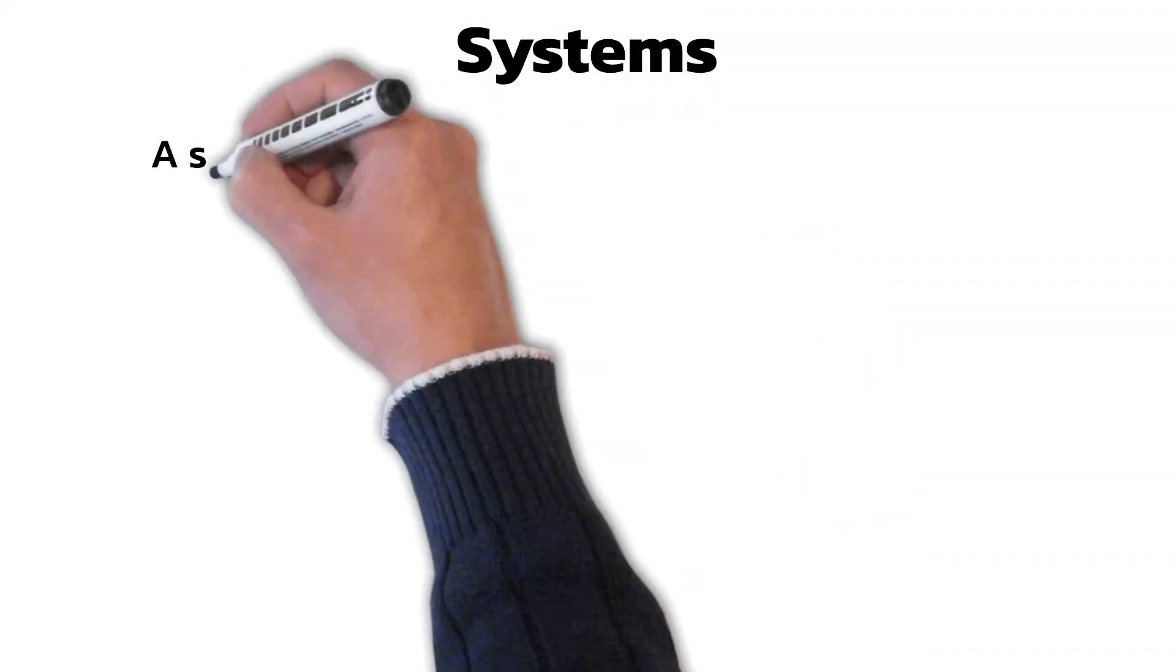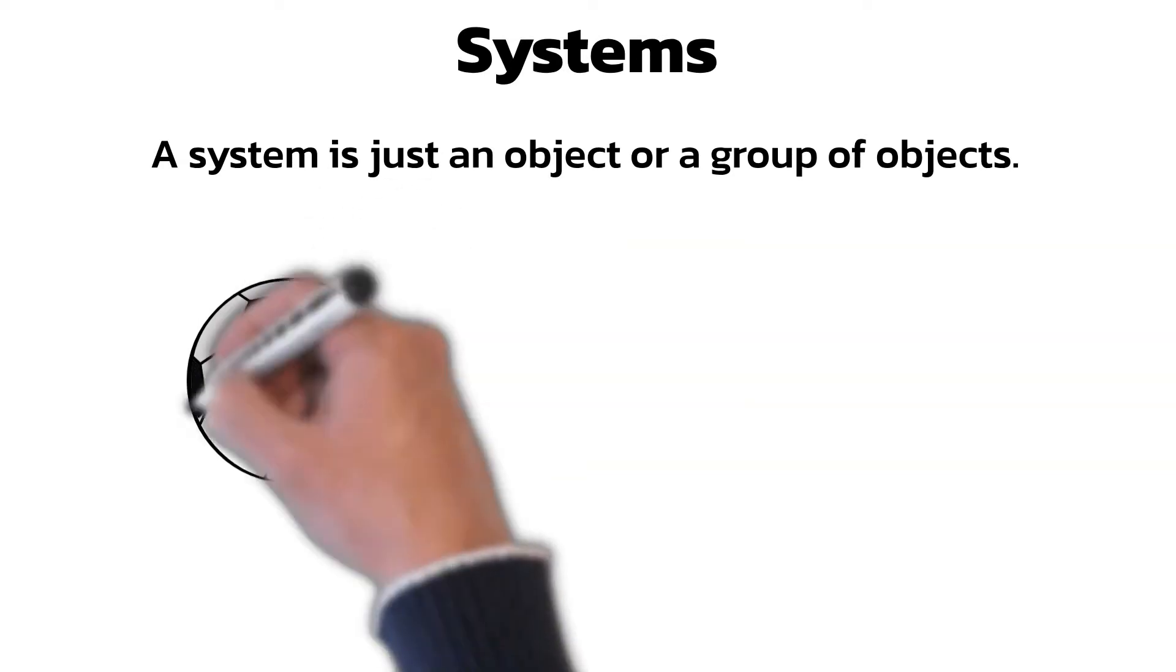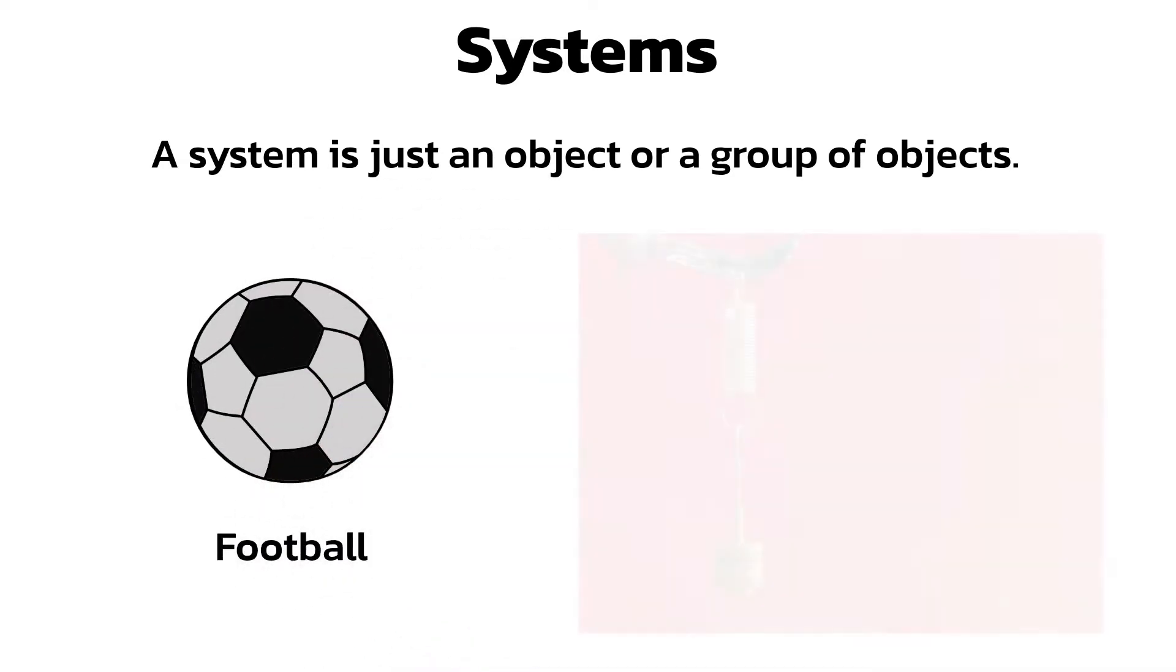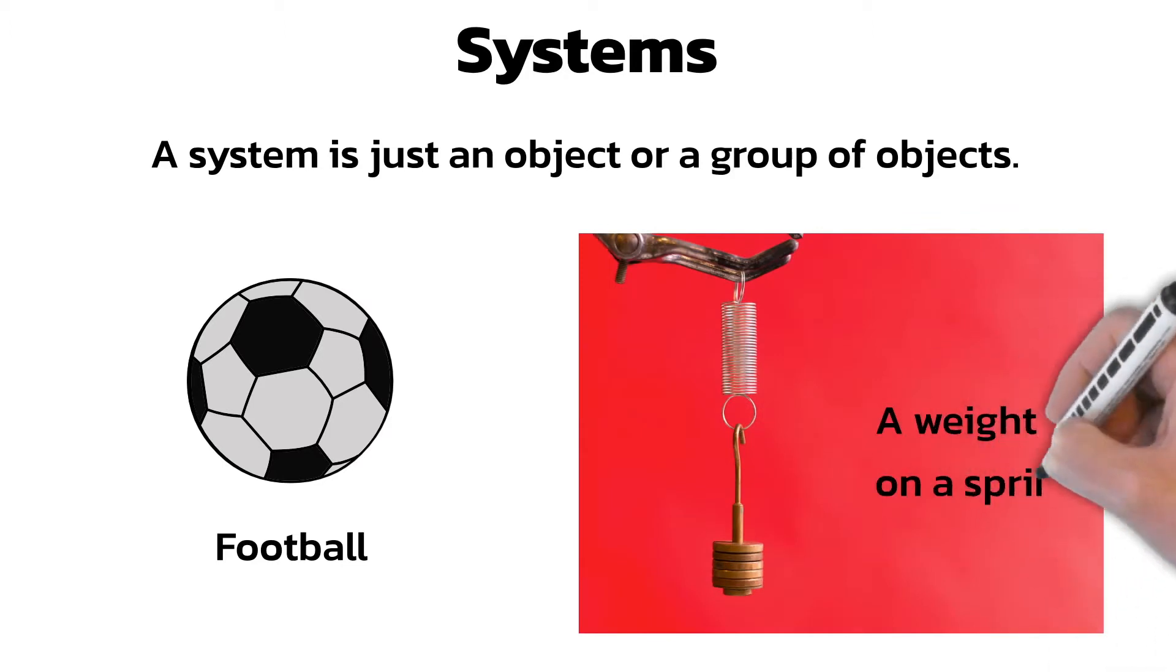In physics, a system simply means an object, or group of objects. If a question refers to a boy kicking a football or a weight hanging on a spring, these are our systems. It means we don't have to worry about any external forces or energy other than what we are given in the question.